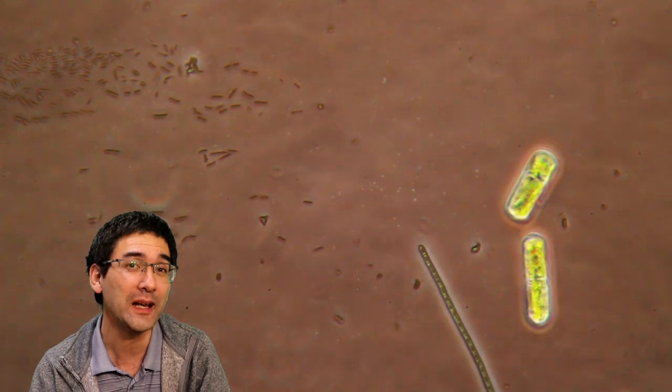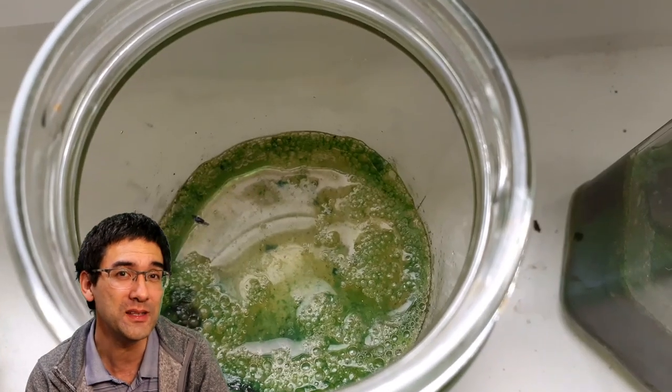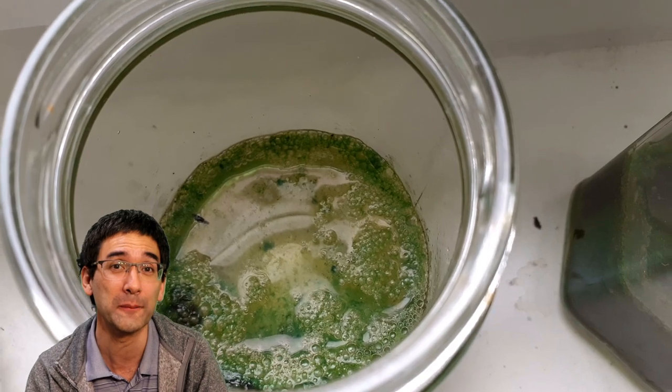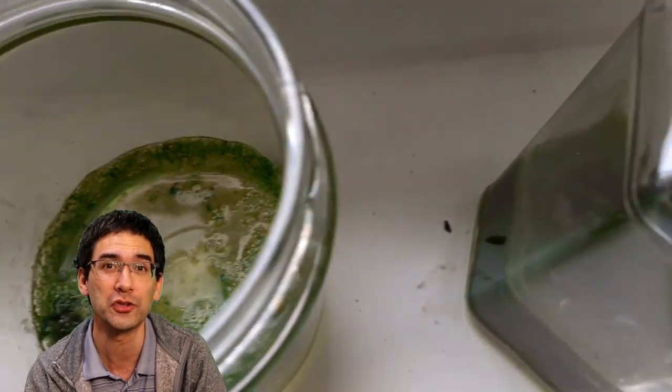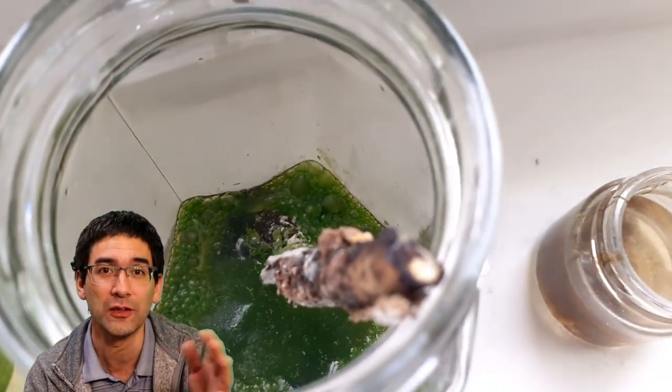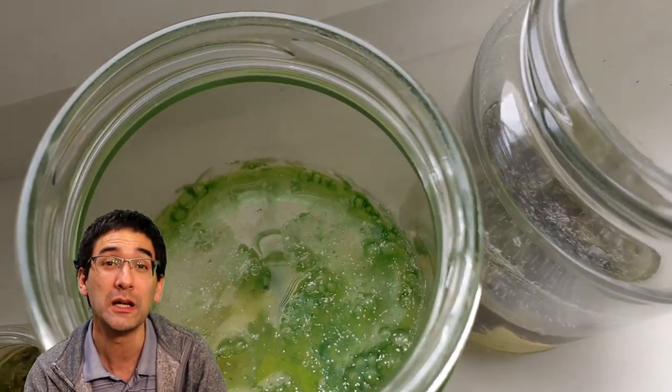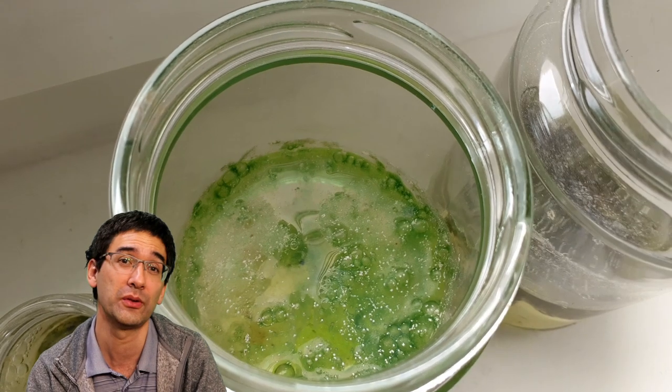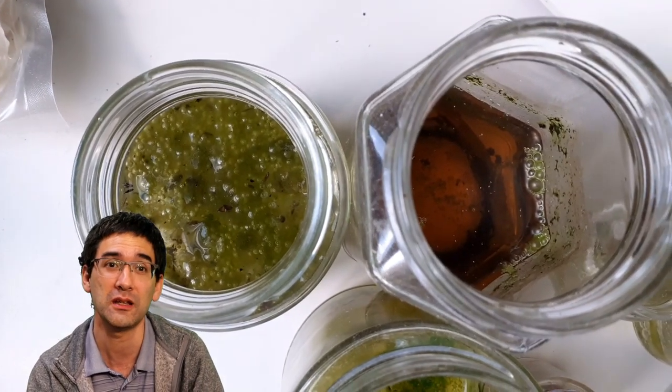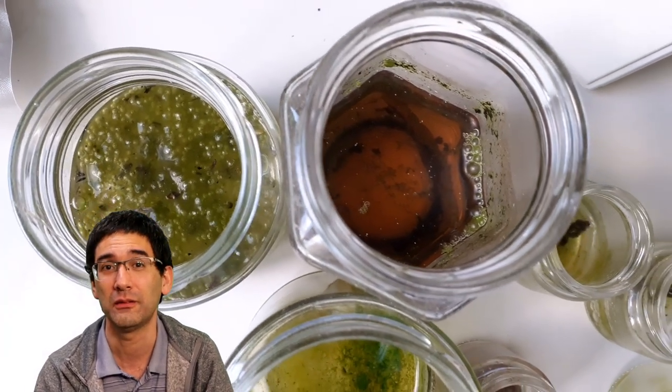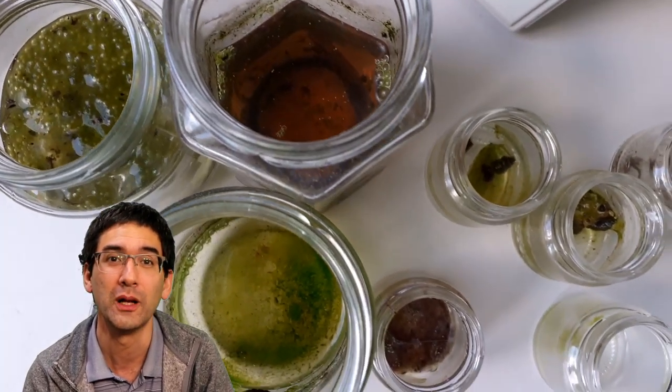I have to admit one thing: you've got to be a little bit careful with these things because you don't know what you're growing. Especially if you're growing cultures that contain a lot of organic substance, like here, for example, a piece of decomposing wood. There are going to be a lot of bacteria in there, so that's something you might want to take care of – it might not be too healthy.